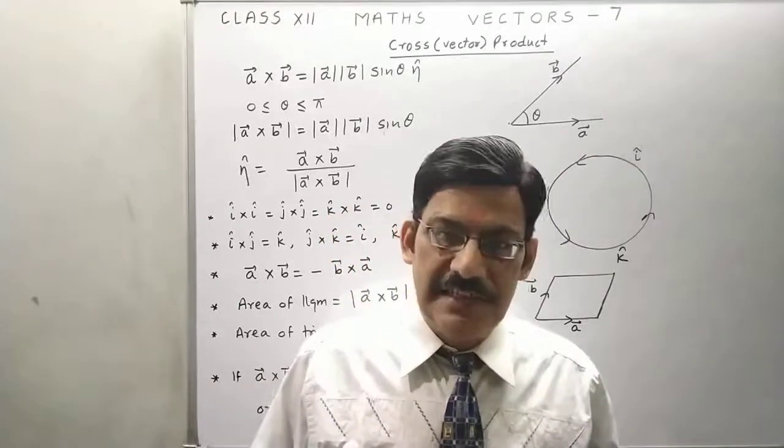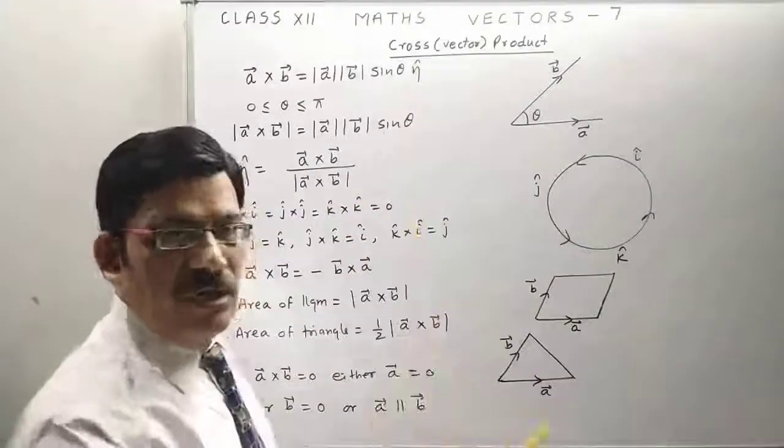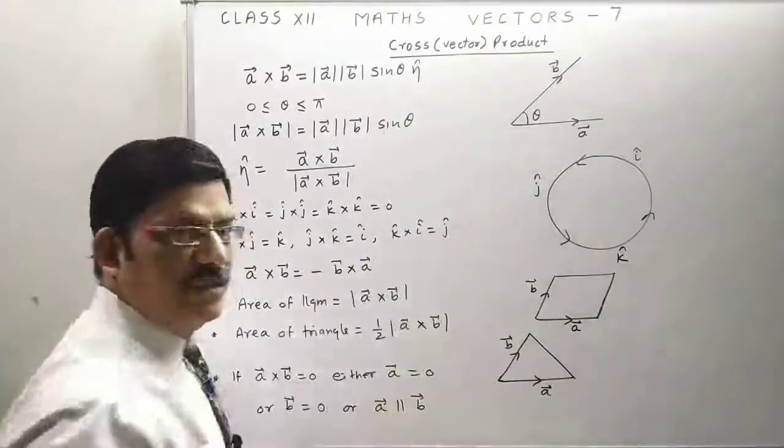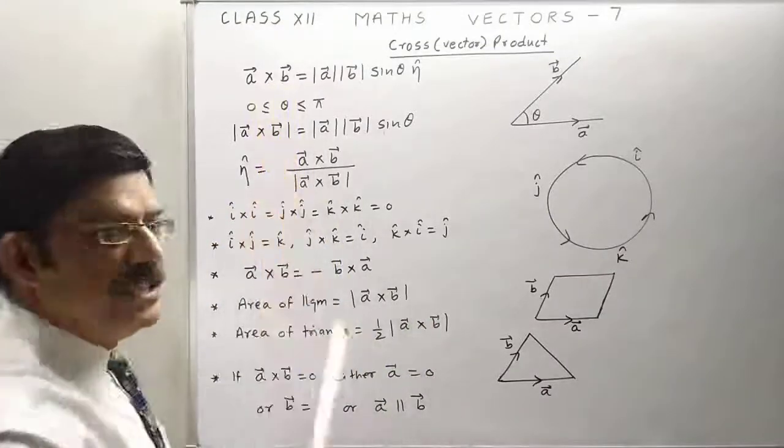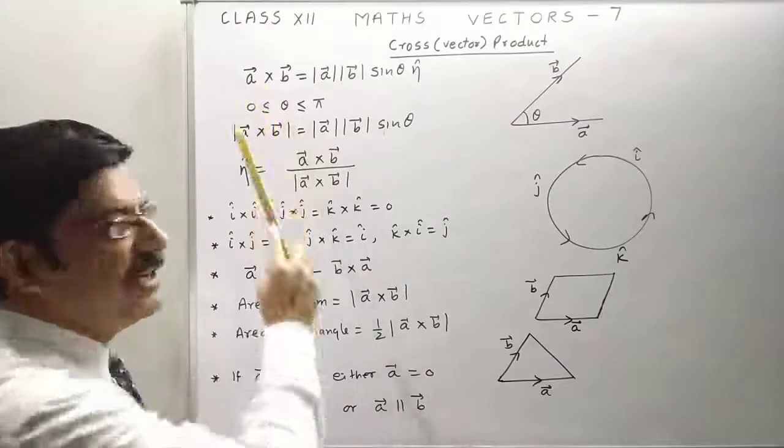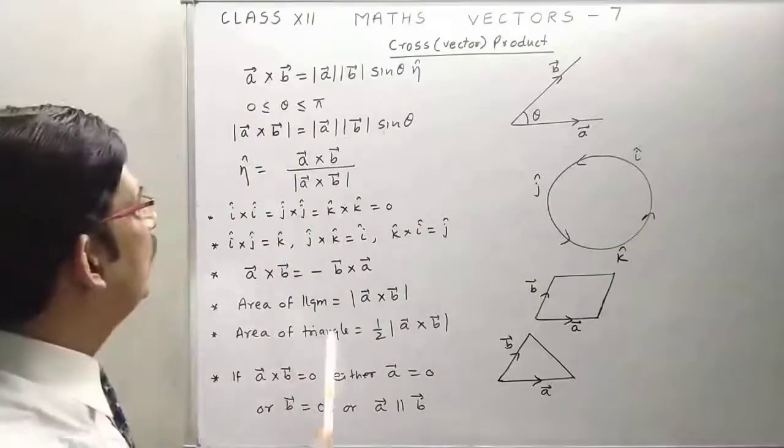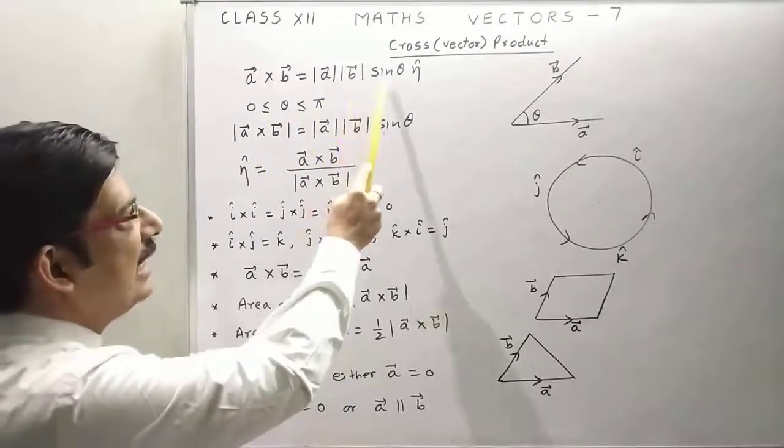Today we will discuss a new topic of vectors called cross product or vector product. Why vector product? Because a cross B is a vector quantity. And why cross product? Because we are using this cross as an operator. The formula for a cross B is magnitude of a times magnitude of B times sine theta.